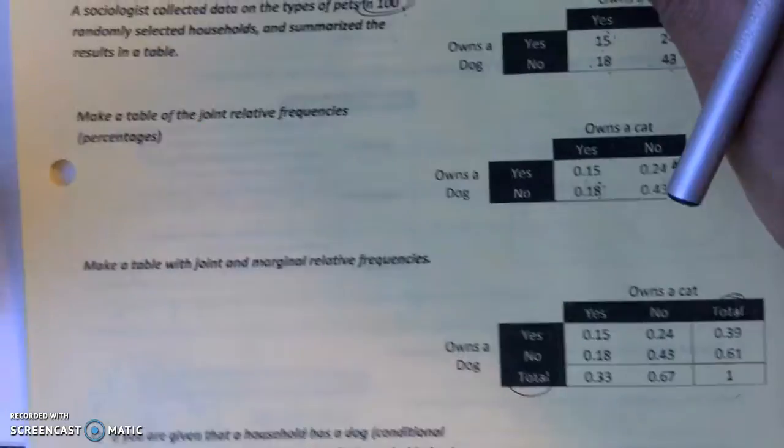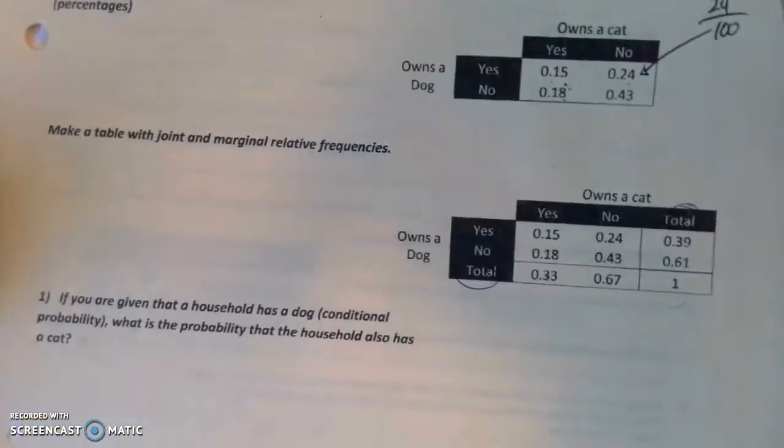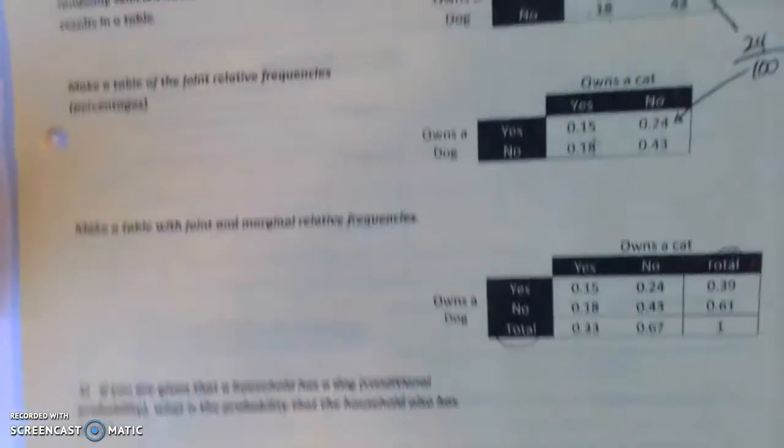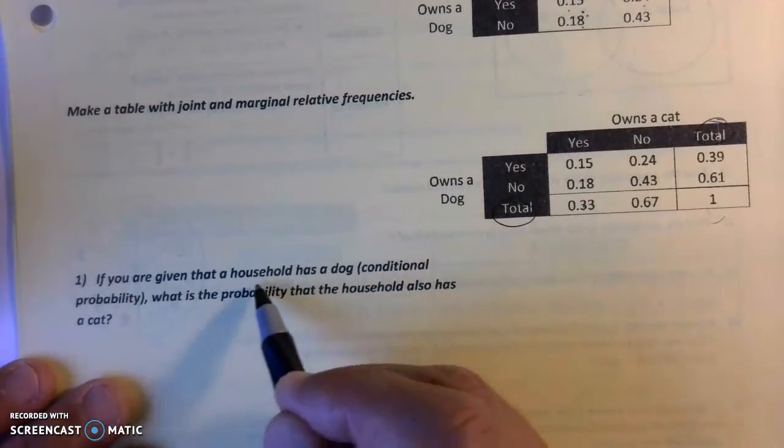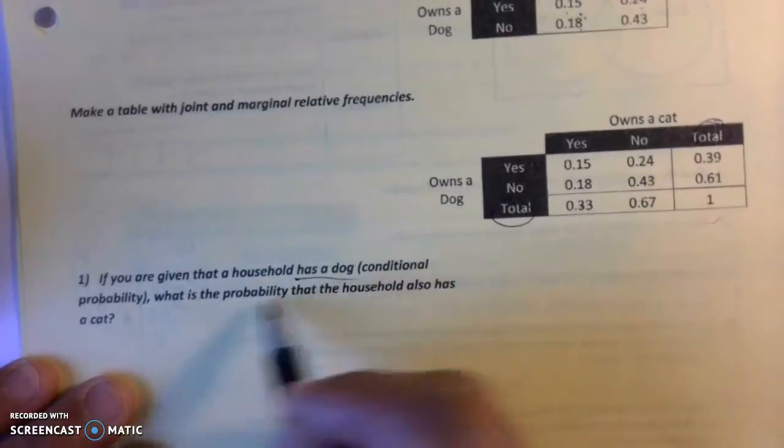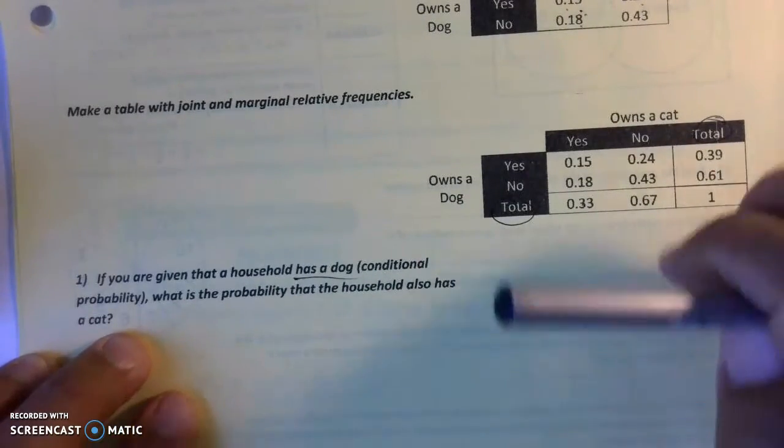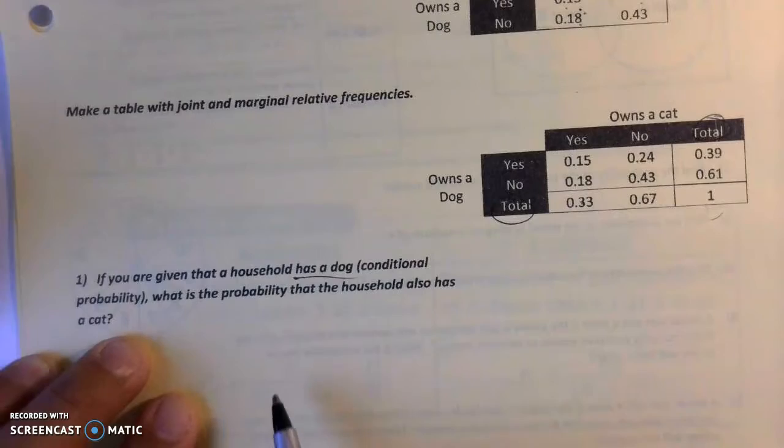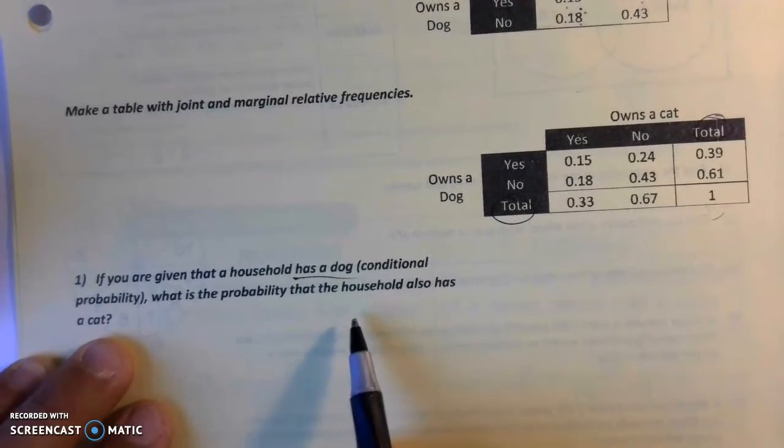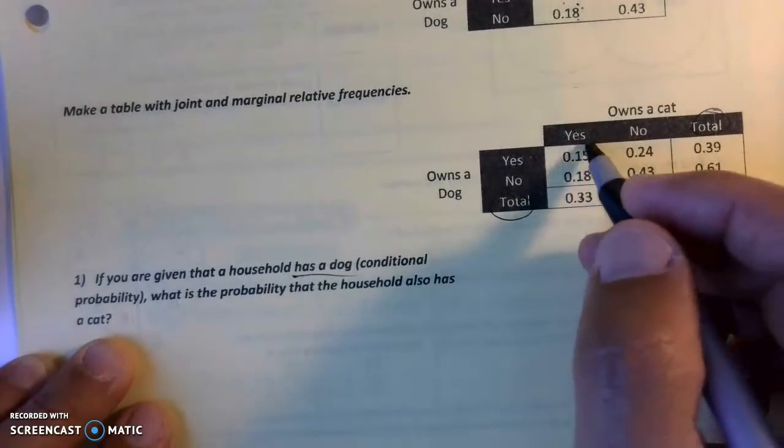Finally, the one problem that's actually a problem here. We'll use these charts to figure out the probability of something occurring. If you're given that a household has a dog—that's a conditional, we already know you're a dog owner—we're looking at this group. What is the probability that the household also has a cat? There's your yeses.